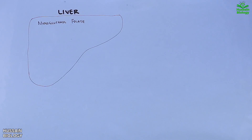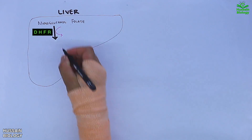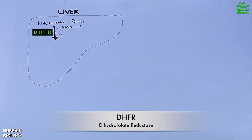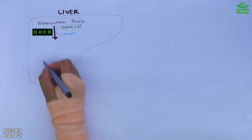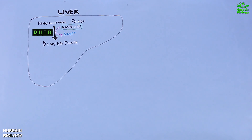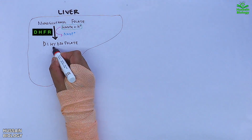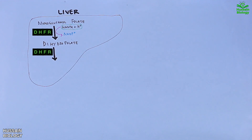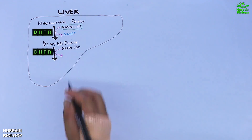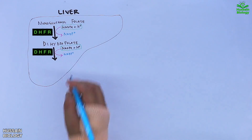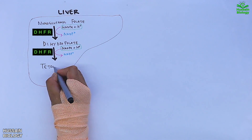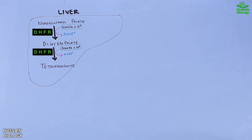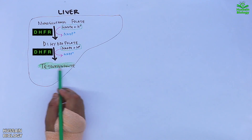In the liver, the monoglutamate folate is acted upon by DHFR — dihydrofolate reductase — which reduces monoglutamate folate to dihydrofolate using NADPH as an electron donor. In the next step, this dihydrofolate is again acted upon by DHFR, which reduces dihydrofolate to tetrahydrofolate (THF), also using NADPH as an electron donor.